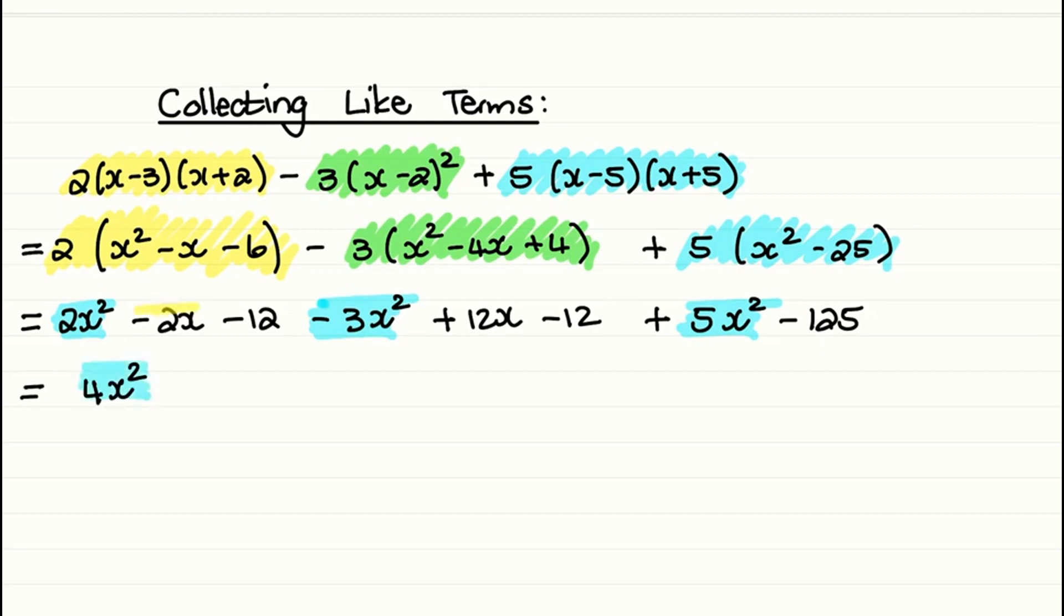Then -2x plus 12x are like terms which we can add together. And that will give us +10x. And lastly, we have -12 - 12 - 125. And when we add that together, we are left with -149.